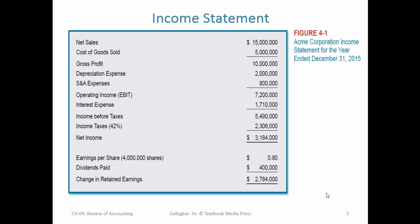First up, the income statement, also known as the profit and loss statement or P&L. The top line on the income statement is the revenue you get from operations, and then we subtract everything that is expenses. There are different measures of income: income before interest and taxes (IBT), income before taxes (EBT), and then once we've subtracted all expenses including income taxes, we get the net income or net profits of the operation.